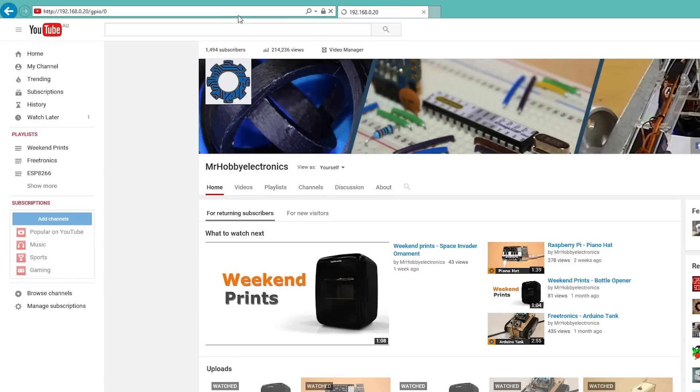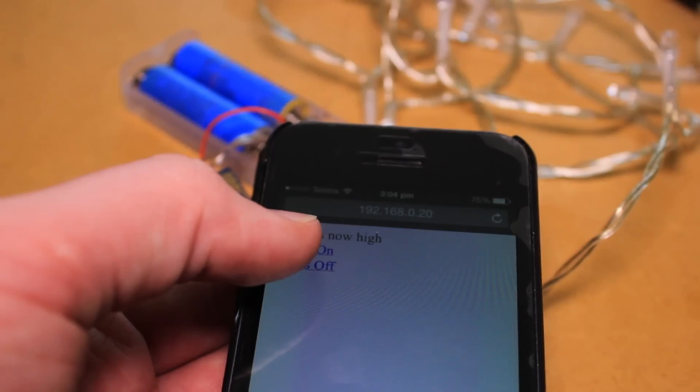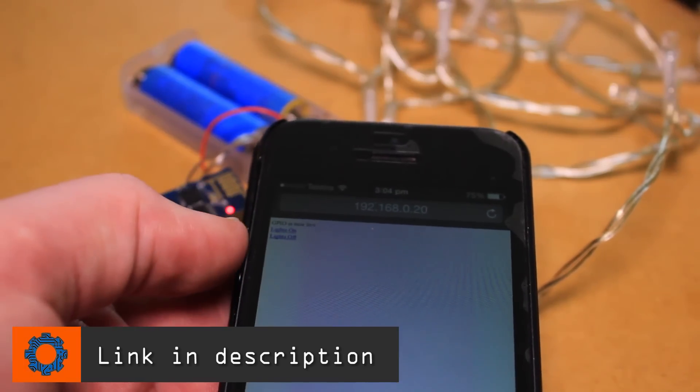Connect to the ESP by entering its IP address followed by forward slash GPIO forward slash zero into an address bar of a web browser. By clicking either of the links on the page you will be able to control the lights.